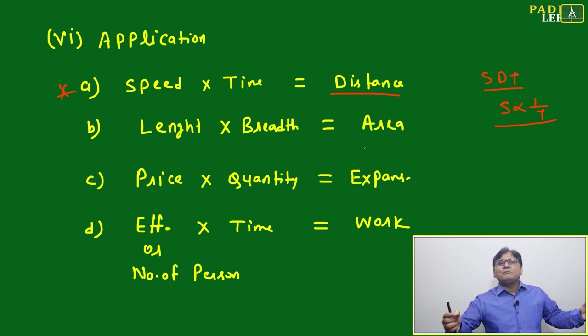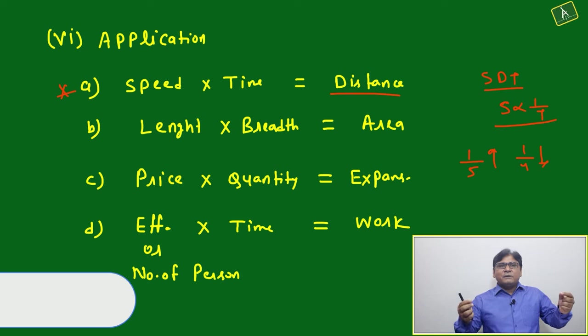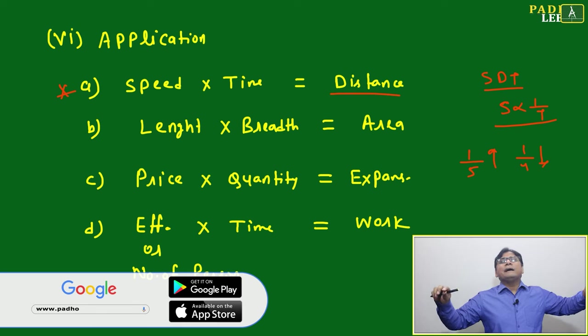If length you are increasing by 20%, means 1/5, you can say, length you have increased, then what will happen? Width will decrease by 1/4. Just suppose if length has increased by 20 percent, then width you have to decrease by 25% to keep the area same.